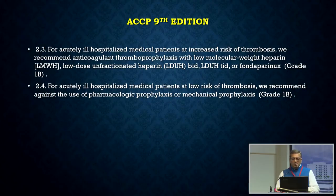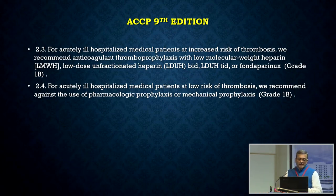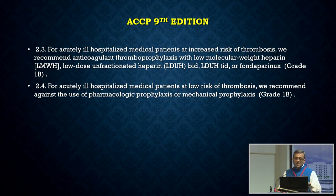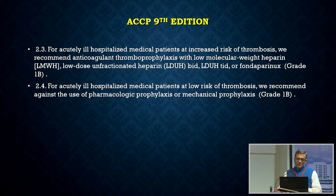Looking at the ACCP 9th edition guidelines, which is not different from the 10th edition of 2018: for acutely ill hospitalized medical patients at increased risk of thrombosis, we recommend anticoagulation thromboprophylaxis with LMWH, unfractionated heparin, or fondaparinux. Unfractionated heparin is given twice a day. This is a Grade 1B recommendation — multiple centres have agreed and shown the same benefit. For acutely ill hospitalized medical patients at low risk of thrombosis, we recommend against any form of thromboprophylaxis.